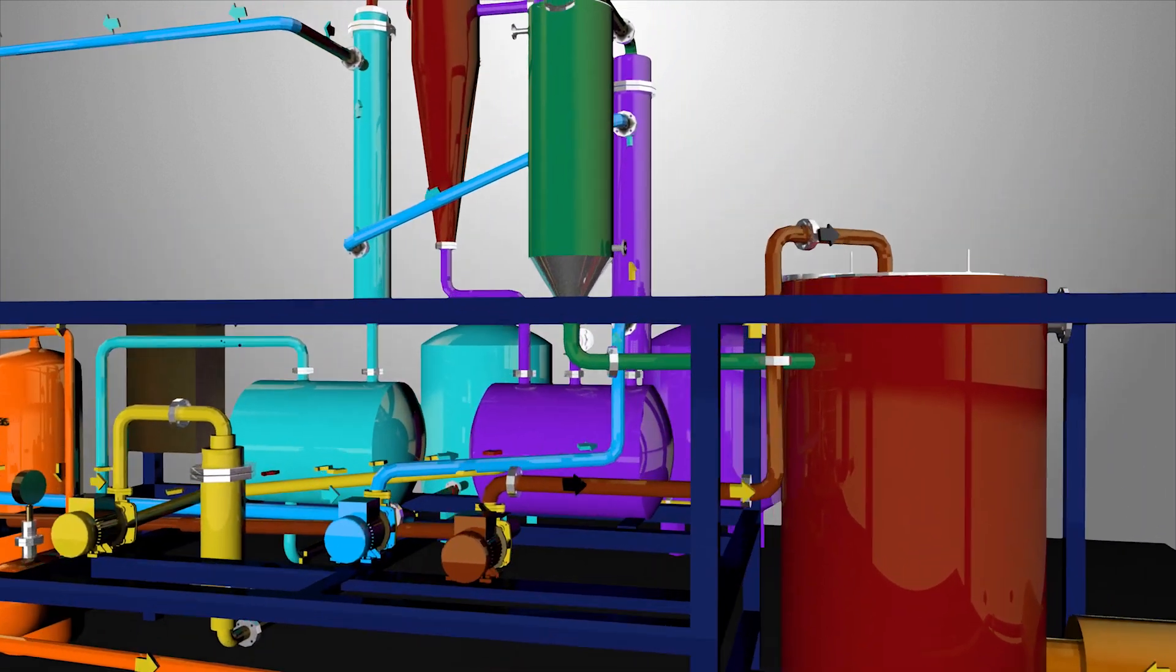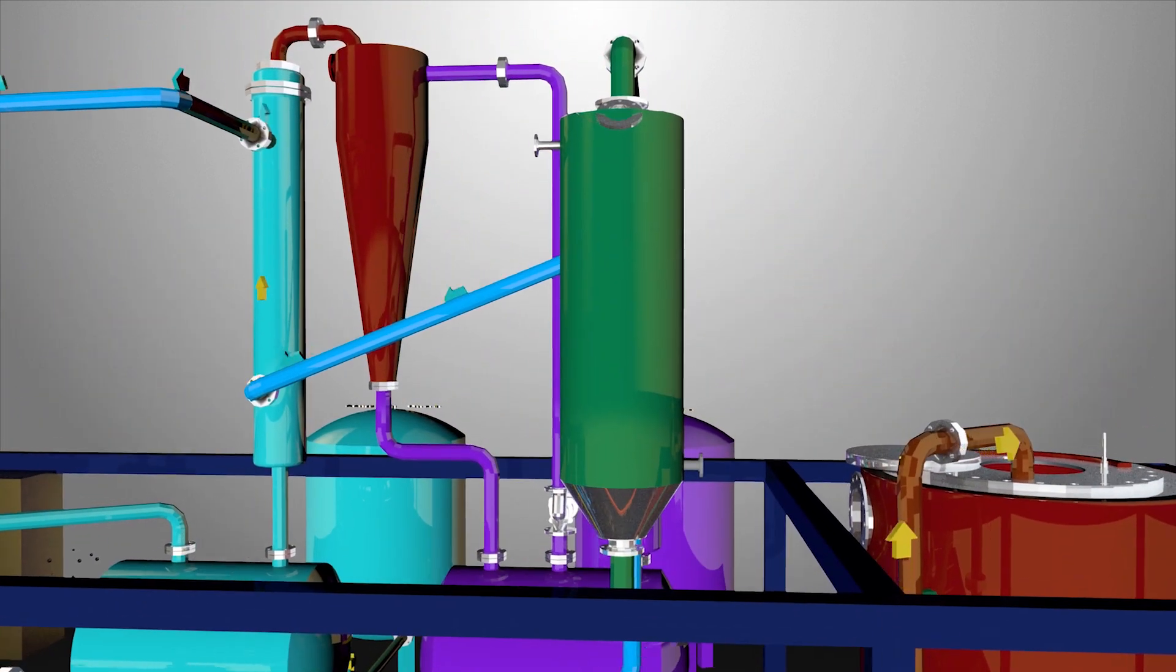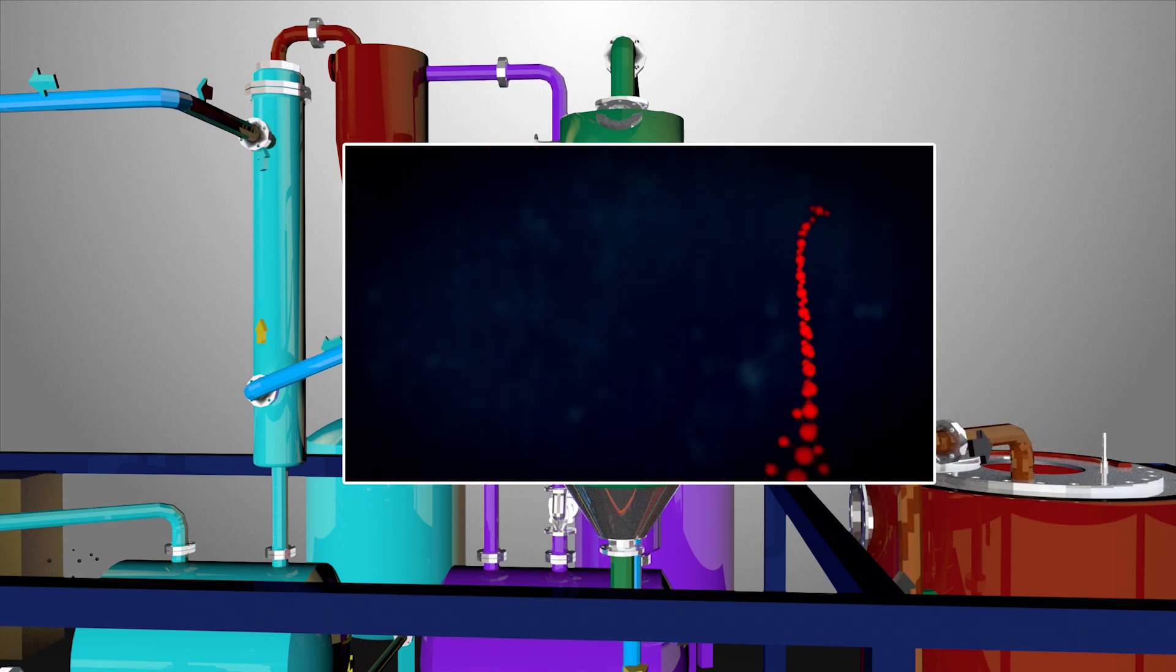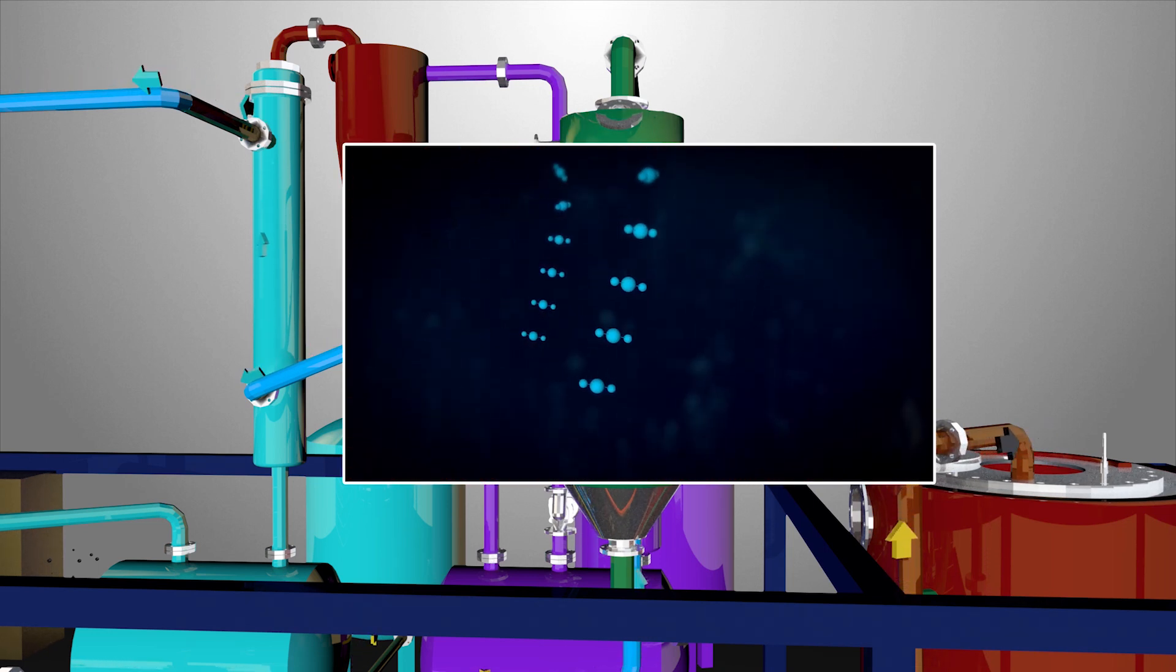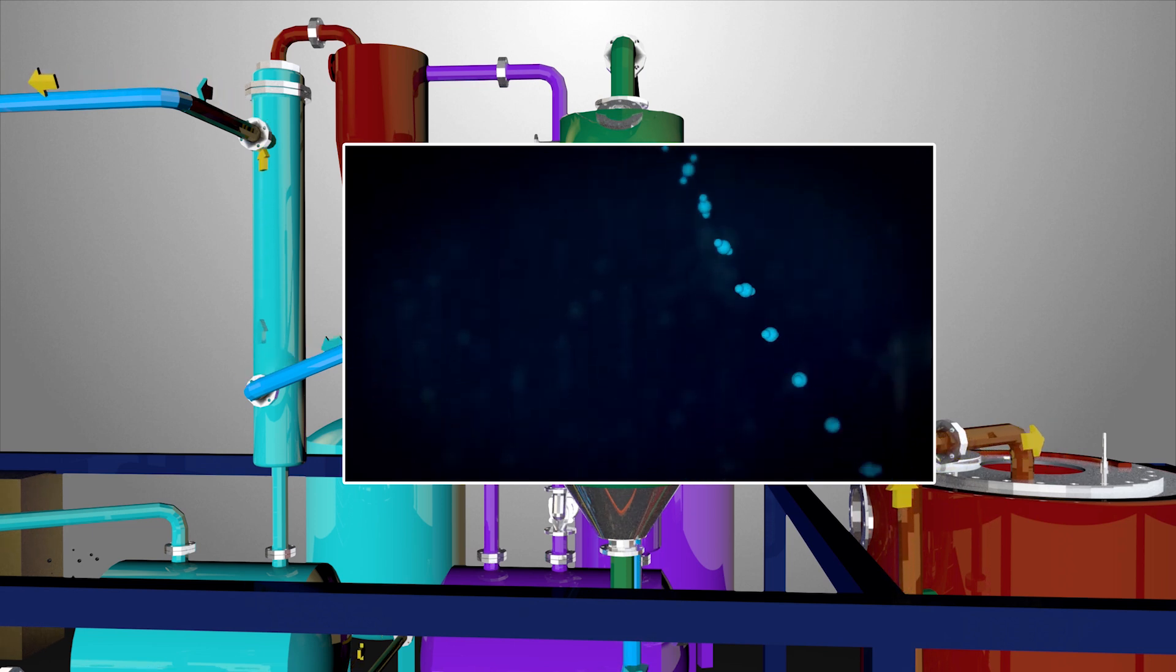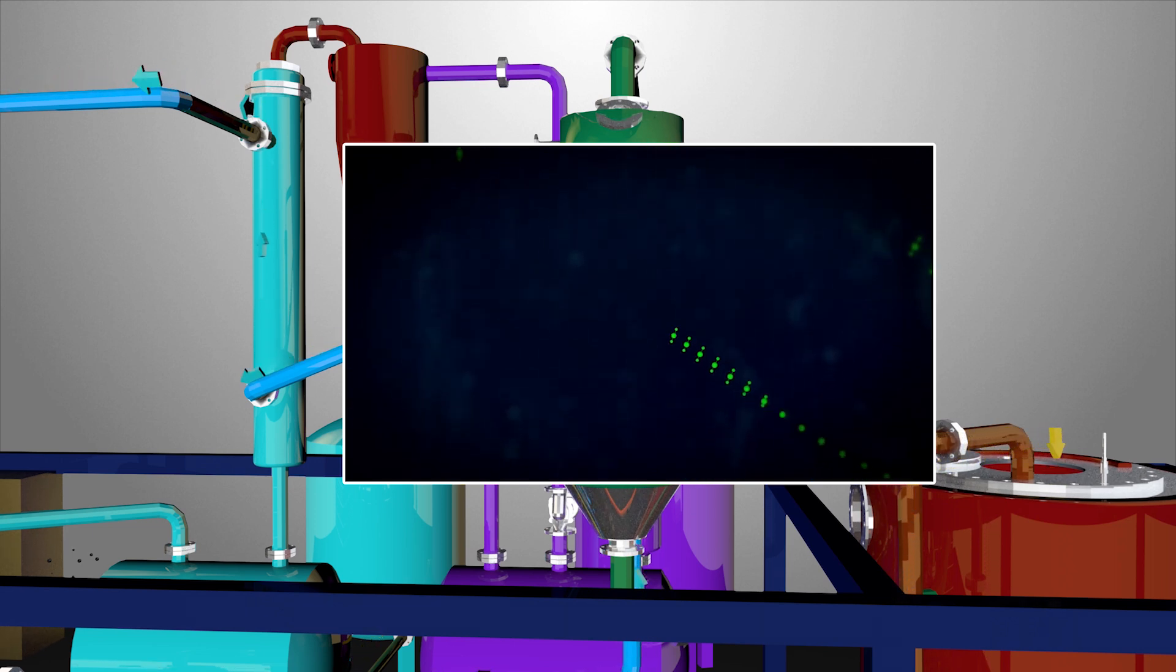Oil vapors from the reactor travel to the catalyst tower. The catalyst tower has a special honeycomb structure so that the wax-like long-chain hydrocarbons are cut down to the desired length of diesel and naphtha range oils.